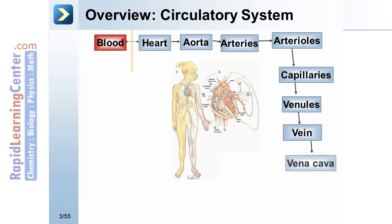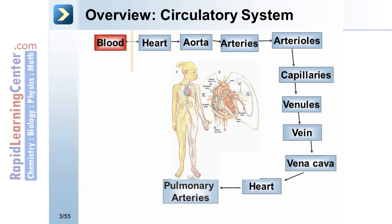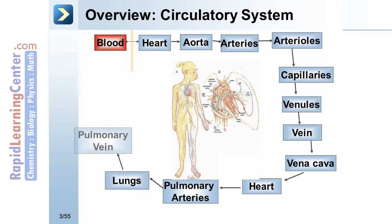Blood continues through the vena cava, back through the heart, pulmonary arteries, lungs, pulmonary vein, and back to the heart — completing the full circle. We're going to look at each one of these steps individually.